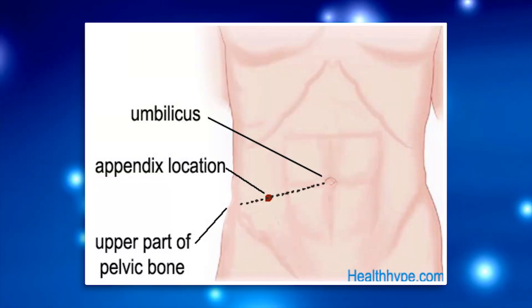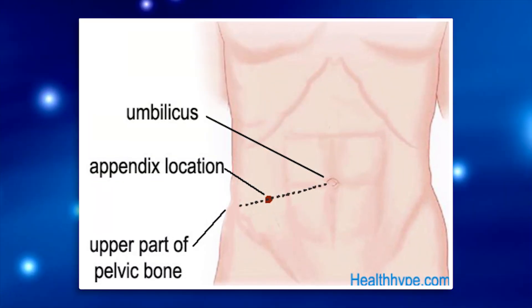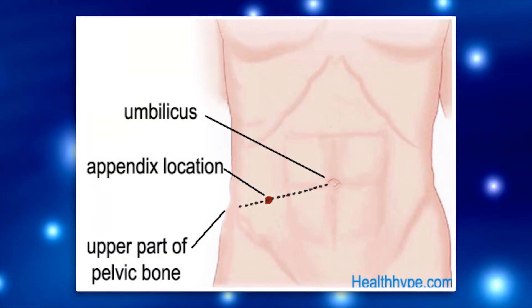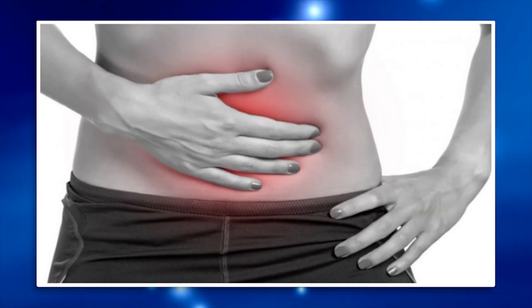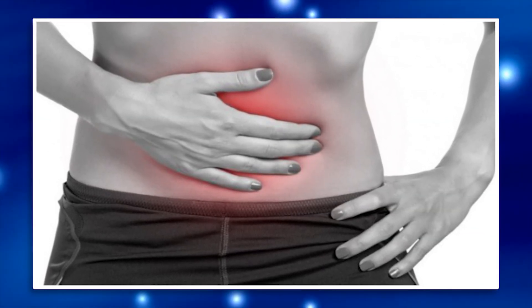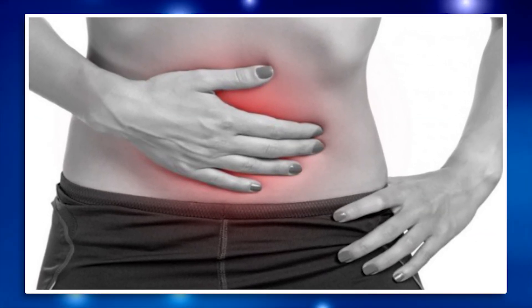There are two things to know about appendix pain. First, you're probably searching appendix pain because you want to know where it is — and that is in the right lower abdomen, what doctors like to call the right lower quadrant. But typically the appendix pain starts in what we call the periumbilical region.